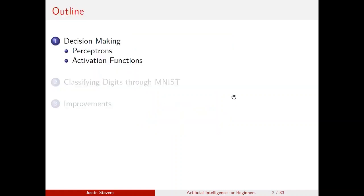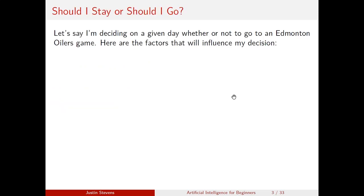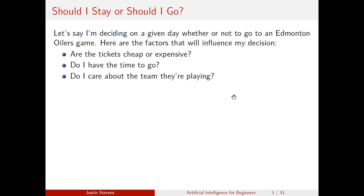I'm going to begin talking about a basic model for decision-making known as a perceptron. Let's frame this through: on a given day, I'm deciding whether or not to go to an Edmonton Oilers game. Here are the factors that will influence my decision: are the tickets cheap or expensive? Do I have the time to go? And do I care about the team they're playing? If they're playing the Ottawa Senators, I almost definitely don't care about the game.